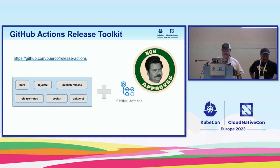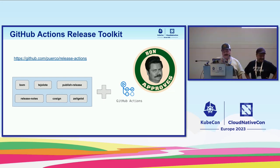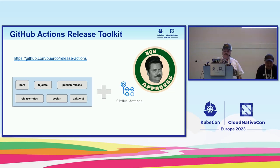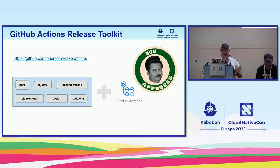We have a repository called release-actions that currently includes bom, Tejolote, and Zeitgeist. Cosign is also implicitly installed because all our binaries are signed by Cosign — when you use this action it also uses Cosign to verify signatures for the binary. The tools still missing from it are publish-release and release notes. Zeitgeist is for checking and tracking your dependencies — it's another tool not directly related to supply chain attestation.